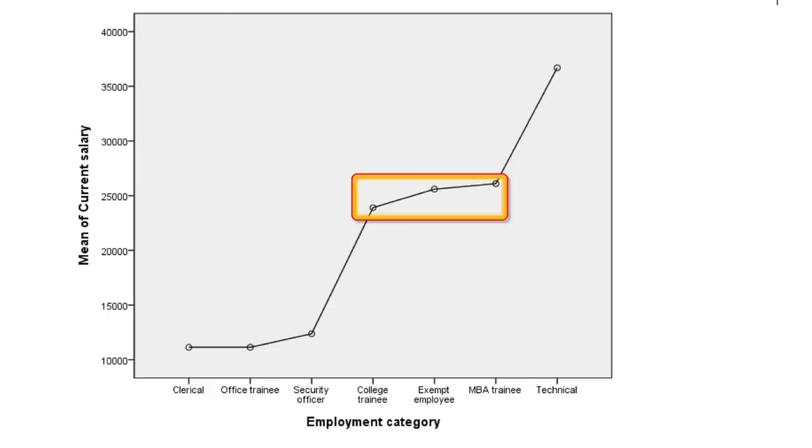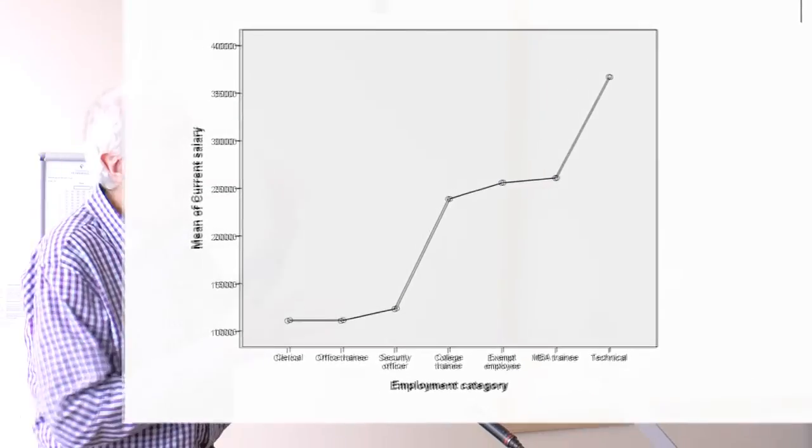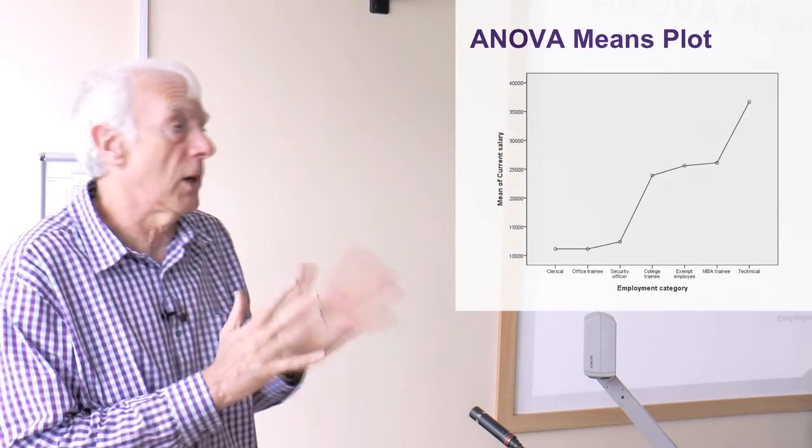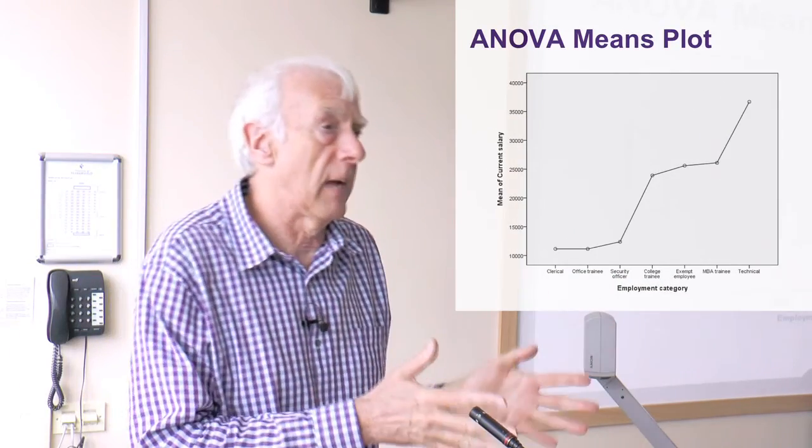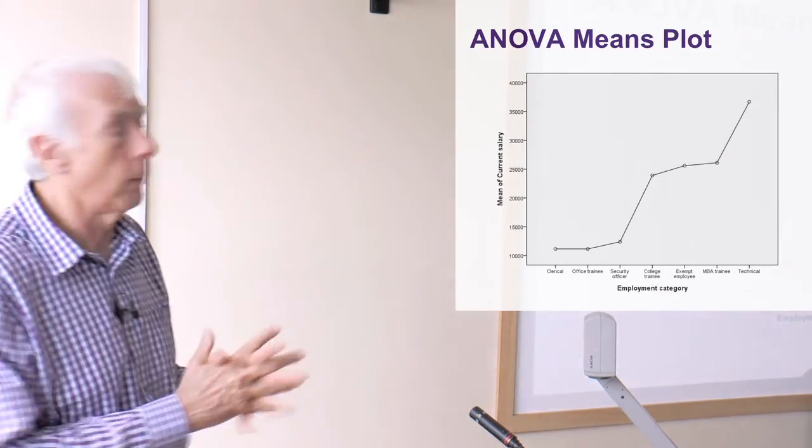And then the most well-paid group, the technical group. So in fact, you've got three salary levels in this particular organisation. You've got the low paid, the middle paid and the very high paid technical people. So the means plot actually is quite interesting to show visually those differences. You can see that from the numbers too, but there's a visual way of presenting that.